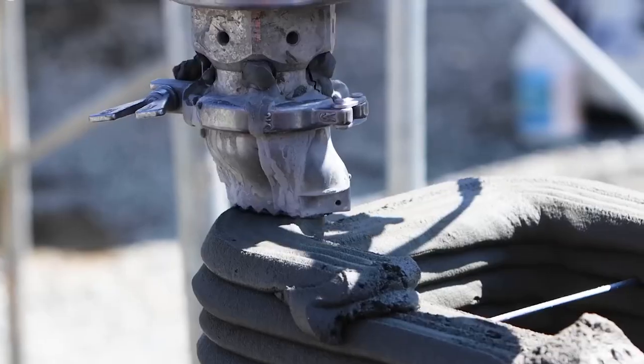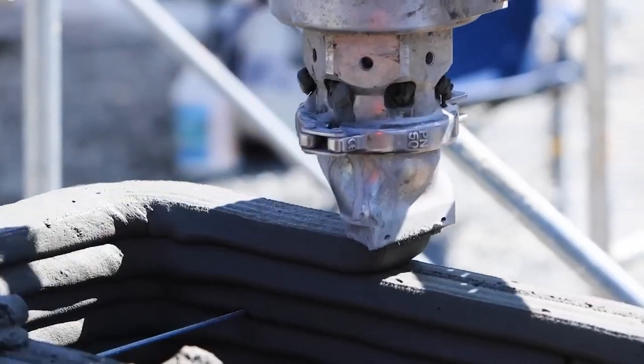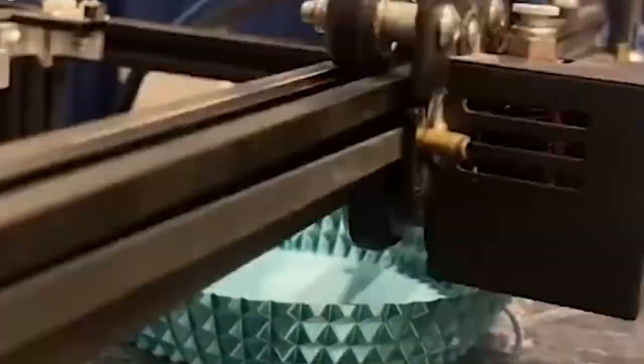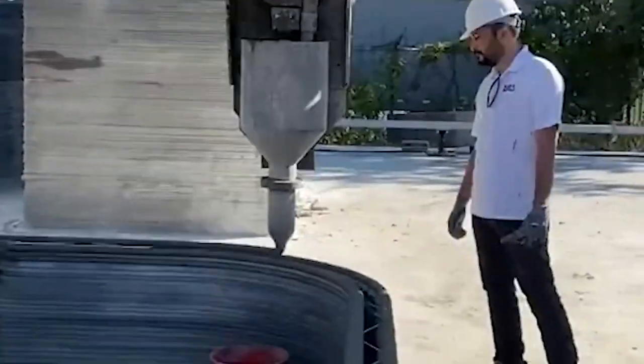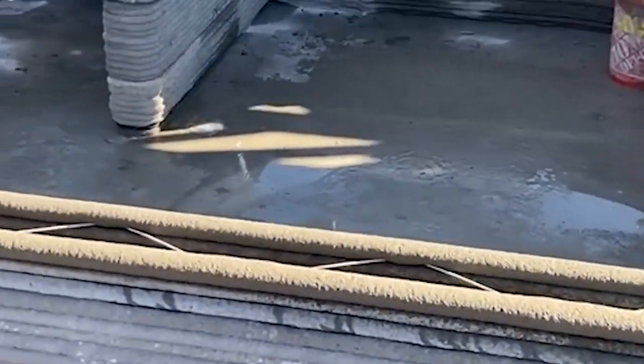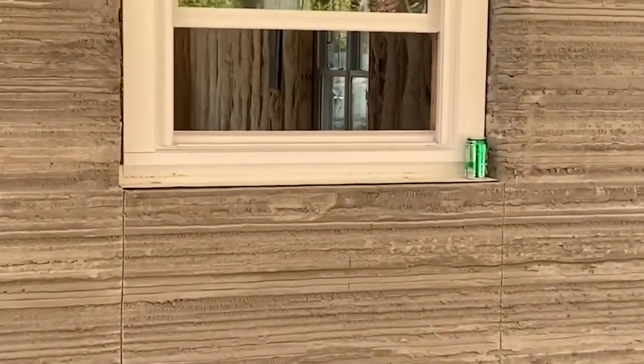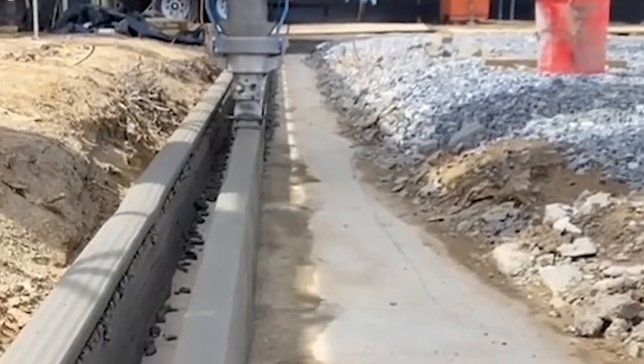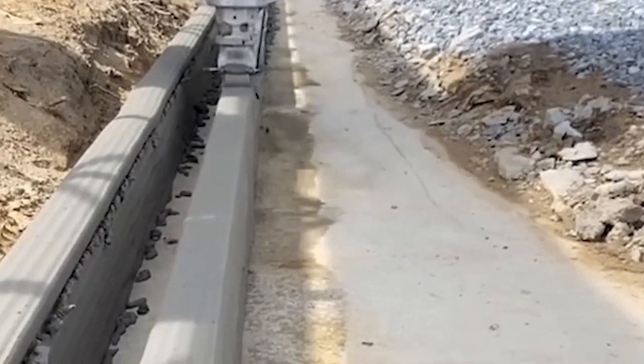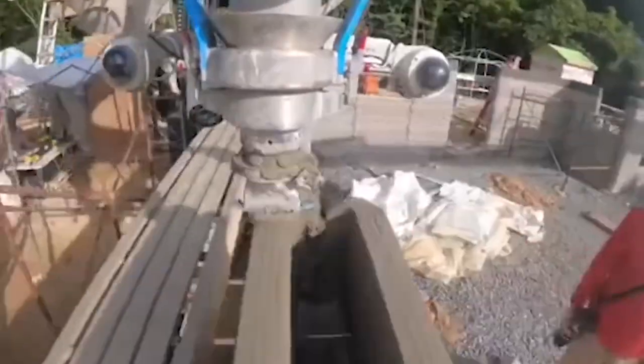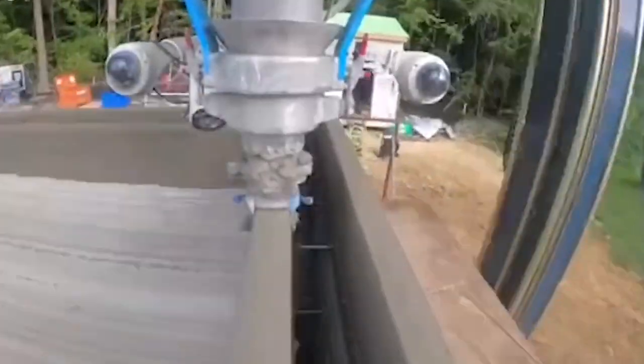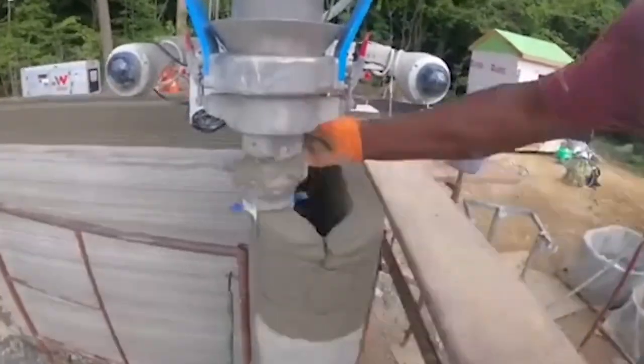While it is not possible or practicable to construct an entire house from 3D printing alone, contour crafting shows a way forward. Contour crafting (CC) is a layered fabrication technology developed by Dr. Behrokh Khoshnevis from the University of Southern California. This technology just might revolutionize the construction industry. Using the contour crafting process, a single house or a colony of houses, each with possibly a different design, may be automatically constructed in a single run, embedded in each house, all the conduits for electrical, plumbing, and air conditioning.